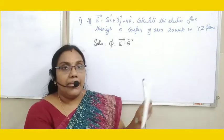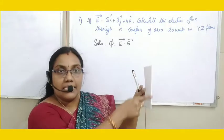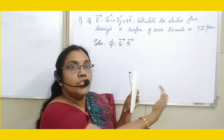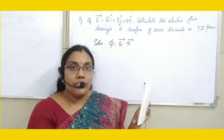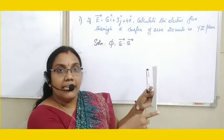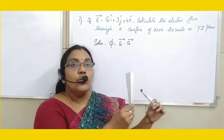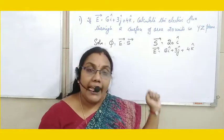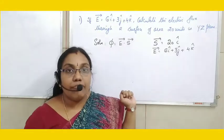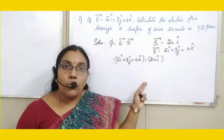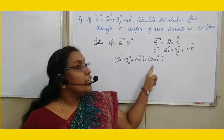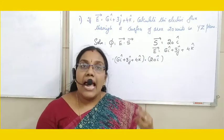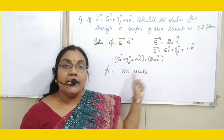The area is placed in the YZ plane. The direction of area vector is the outward normal, which is along the X direction. So area vector S⃗ = 20î. Taking the dot product of E⃗ · S⃗, we get I·I = 1, J·I = 0, and K·I = 0. So the answer is 6 × 20 = 120 units. Hence, electric flux is 120 units.